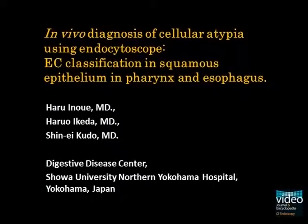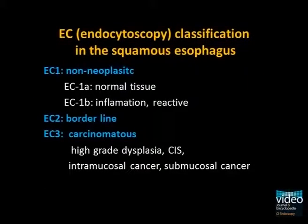In this video presentation, we would like to demonstrate a cytoscopic image following EC classification in the pharynx and the esophagus. In the cytoscopic image with crystal violet and methylene blue CM double staining, findings can be classified into three major categories: EC1 is non-neoplastic, EC2 is borderline, and EC3 is cancer.